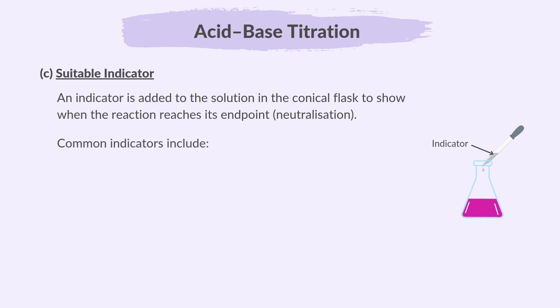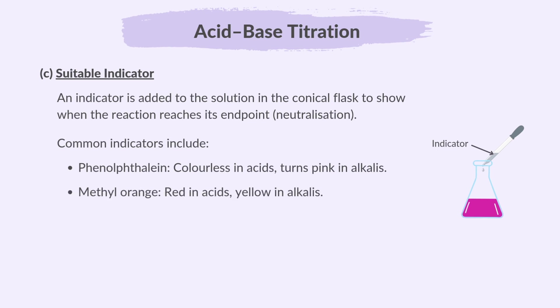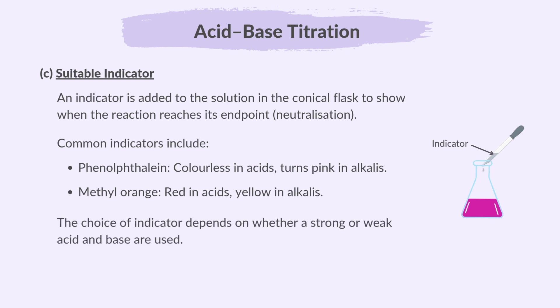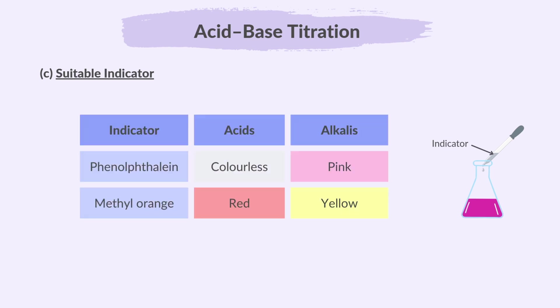Common indicators include phenolphthalein, which is colorless in acids and turns pink in alkalis, and methyl orange, which turns red in acids and yellow in alkalis. The choice of indicator depends on whether a strong or weak acid and base are used. Here's a table to remember the color changes of common indicators.